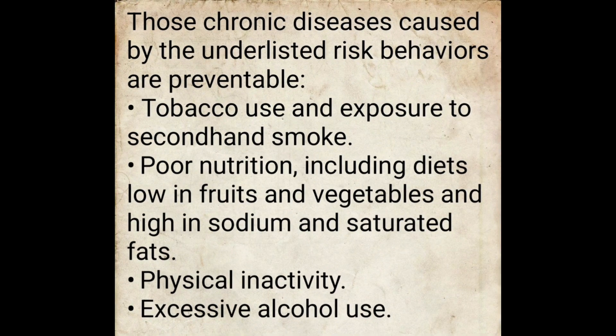These chronic diseases caused by the underlisted risk behaviors are preventable. These include: tobacco use and exposure to secondhand smoke — when you are in a smoky environment, you must be careful. Poor nutrition, including diets low in fruits and vegetables and high in sodium and saturated fat — especially sodium and saturated fat — makes you prone to cardiovascular disease. Physical inactivity — obesity could also result. Excessive alcohol use.